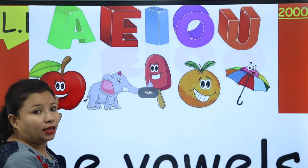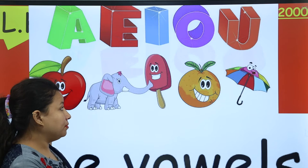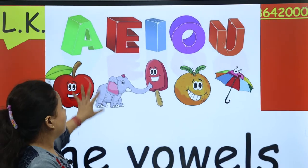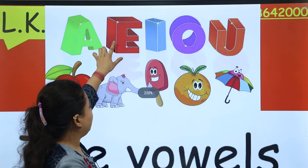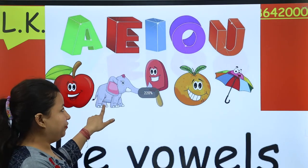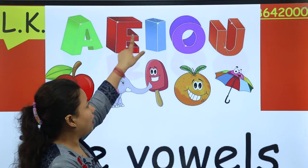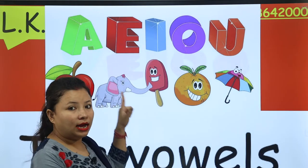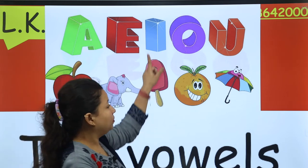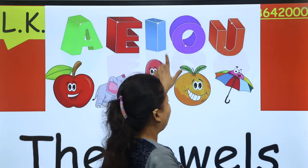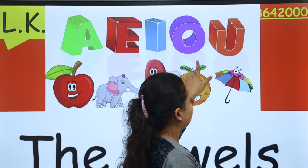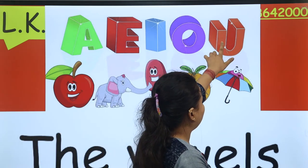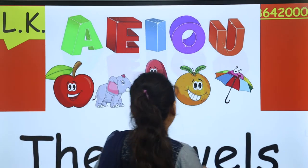A — Apple. E — Elephant. I — Ice cream. O — Orange. And U — Umbrella.